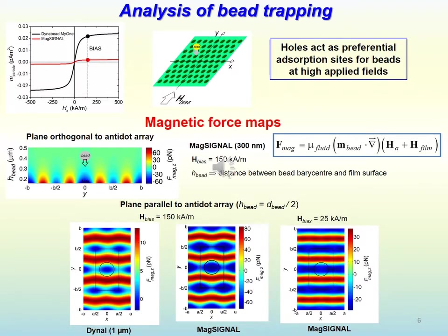The analysis of bit trapping has demonstrated that the holes in the antidot array behave as absorption sites for bits at large applied magnetic fields. This is visible in the maps of the magnetic force produced by the antidot array on the particles. Specifically, large attractive forces, which correspond to the negative peaks colored in blue in the maps, are found above the antidot array holes as a consequence of the interaction with the magnetostatic field produced by the antidot array.